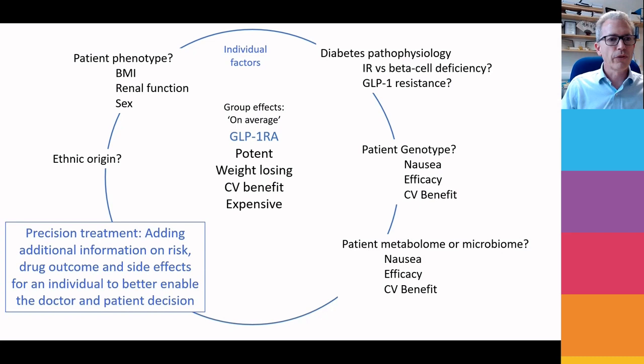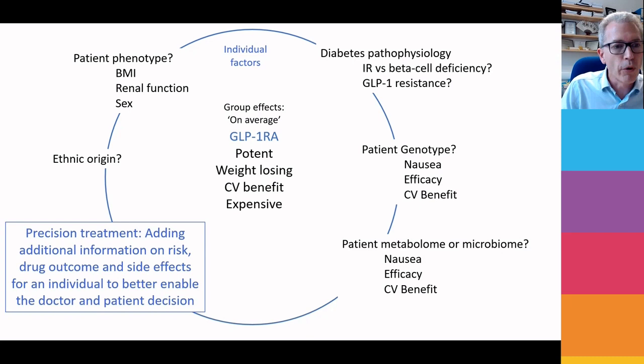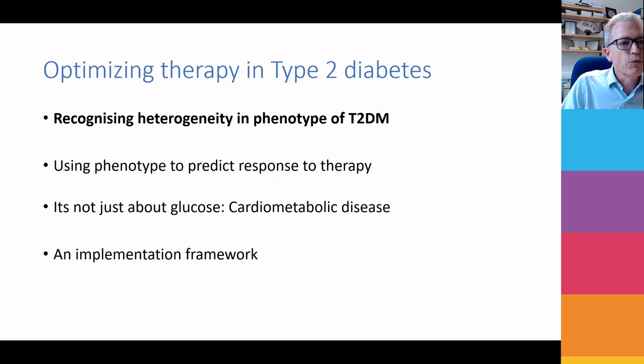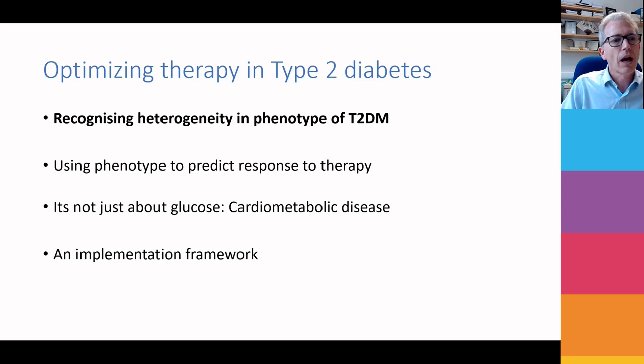What we want to know when we're treating our patients is how is the patient in front of us going to respond to that drug? So we might consider their ethnic origin, their phenotype, simple things like BMI and renal function, more complex pathophysiology, their genotype, their metabolome, the microbiome. You can see how we could factor all of these individual factors in to better inform our decision-making around outcome and side effects — and that's really precision treatment. In the next 14 minutes, I want to think around how we can optimize treatment in type 2 diabetes: heterogeneity in type 2 diabetes, how we can predict response, move beyond glucose to cardiometabolic disease, and how we are implementing precision diabetes care in Tayside.